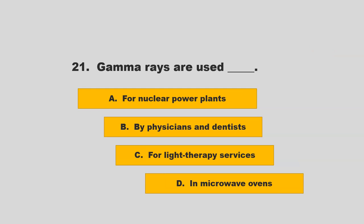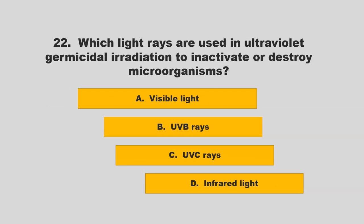Gamma rays are used blank. Is it for nuclear power plants, by physicians and dentists, for light therapy services, or in microwave ovens? If you chose A, for nuclear power plants, you are correct.